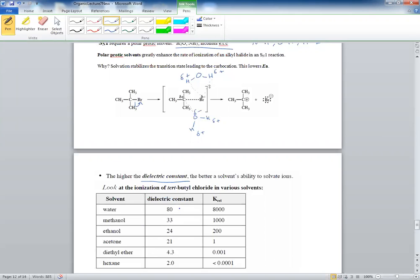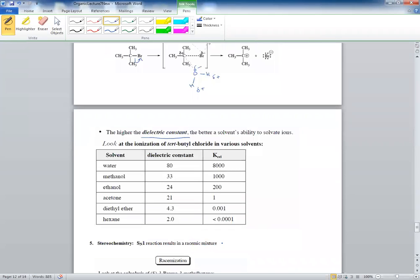Water has 80. Look at how significant the reaction would be: reaction rate 8,000. Methanol is 1,000, ethanol is 200, and acetone would be 1. Nonpolar solvents would be almost nothing. So the higher the dielectric constant, the better.